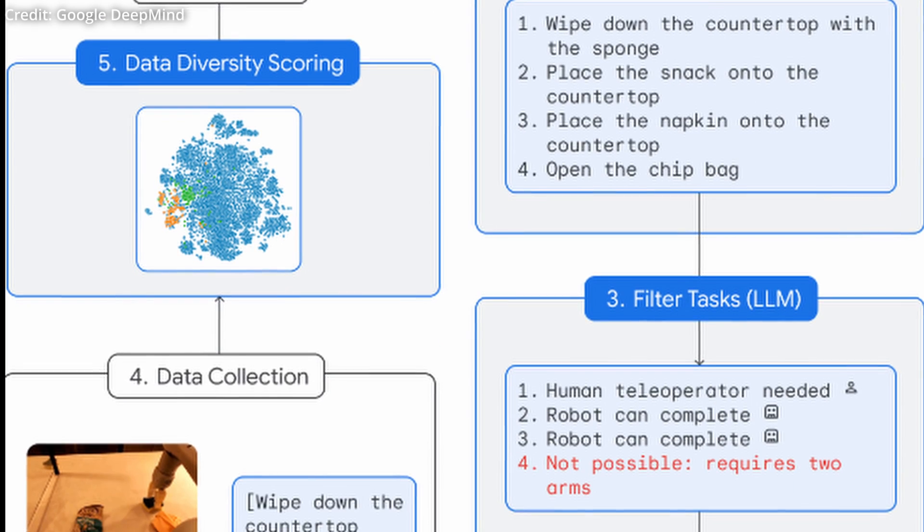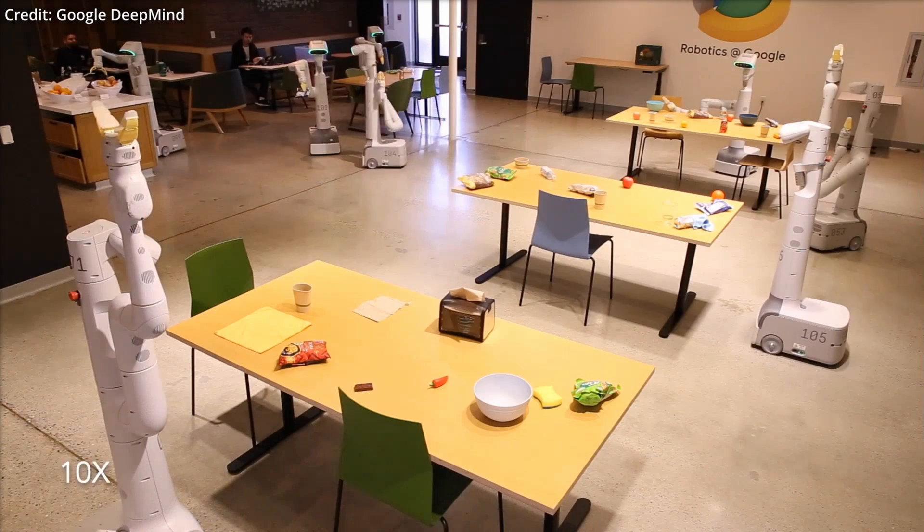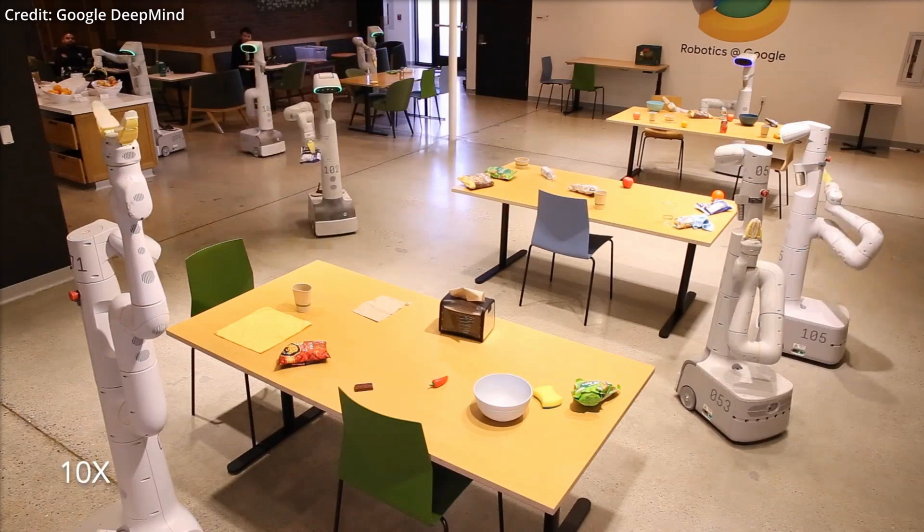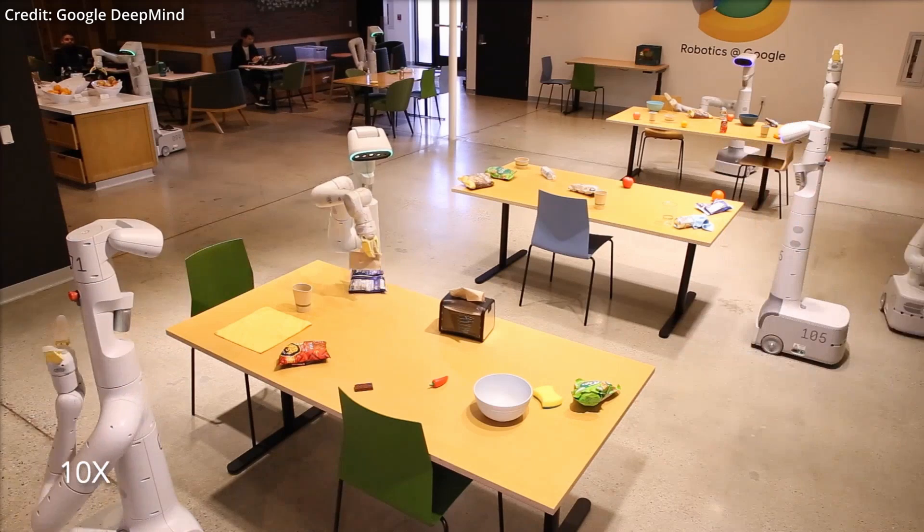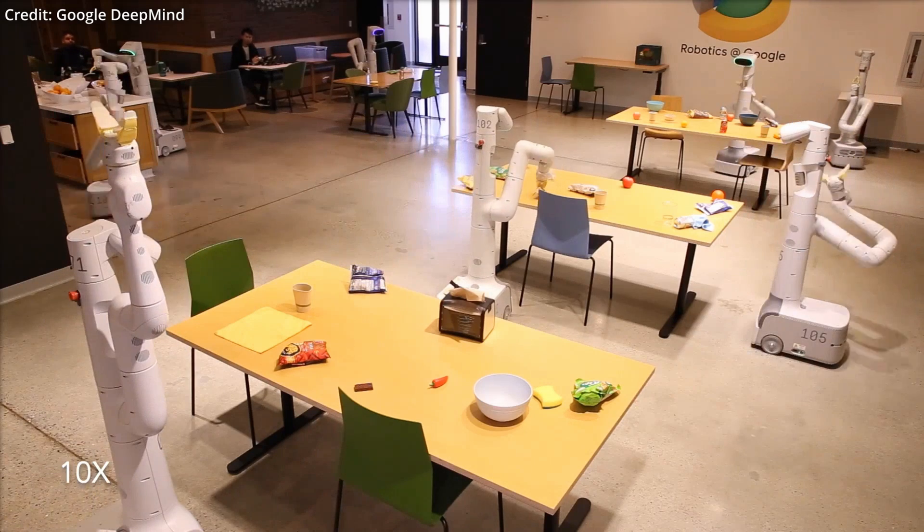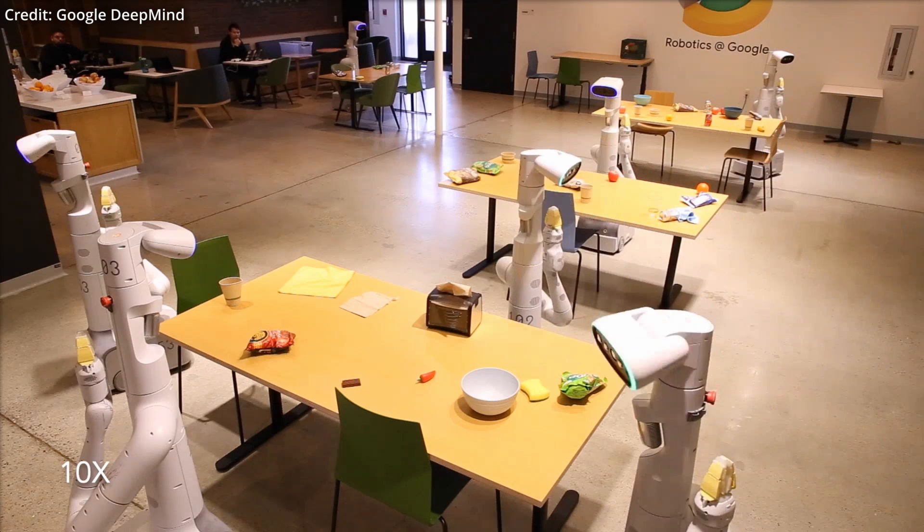Impressively, over a seven-month evaluation period, AutoRT trained up to 20 robots at once, involving a total of 52 unique robots. This resulted in a comprehensive dataset encompassing 77,000 robot trials across 6,650 individual tasks.